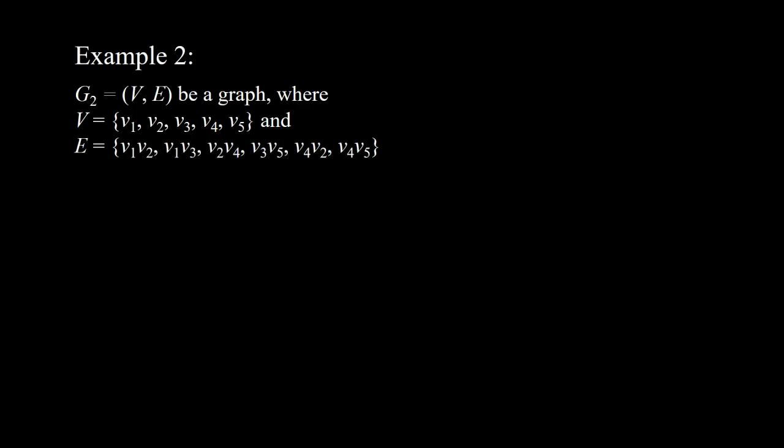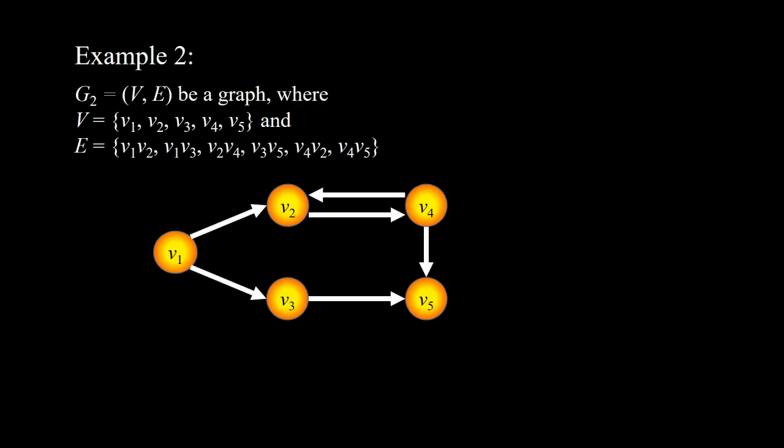Example 2. Let G2, which equals to the pair of V and E, be a graph, where V is the set of V1, V2, V3, V4, and V5. And E is the set of edges: (V1,V2), (V1,V3), (V2,V4), (V3,V5), (V4,V2), and (V4,V5). This is the picture representing the graph G2, that consists of 5 vertices and 6 edges.